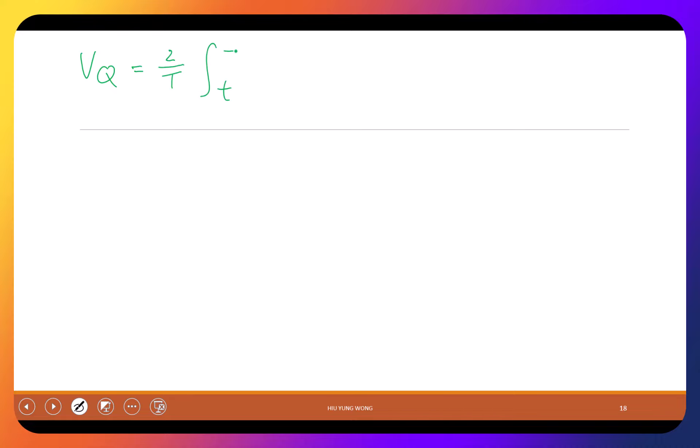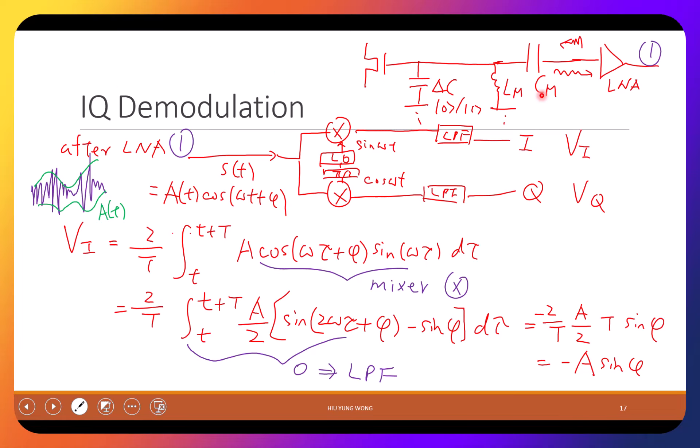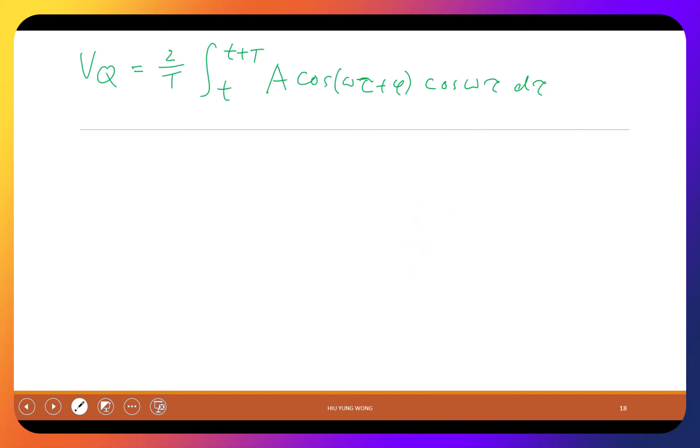For the other part of the quadrature term, you have something similar, but this time what you are doing is you mix it with cosine omega t. Here you mix it with sine, but now you mix it with cosine.